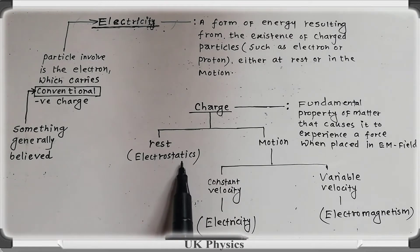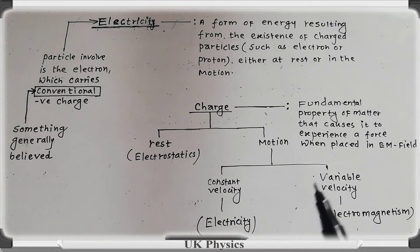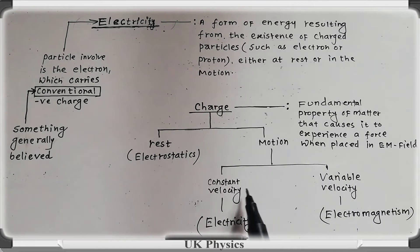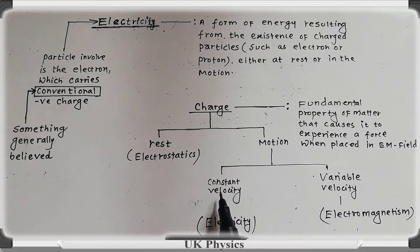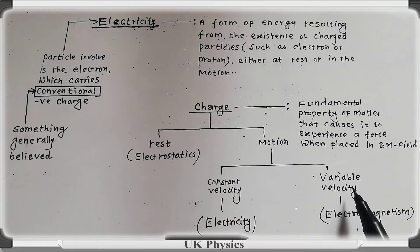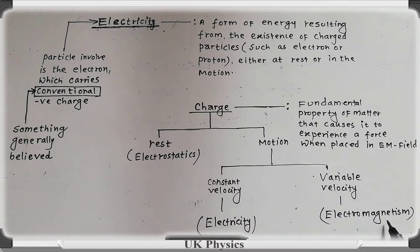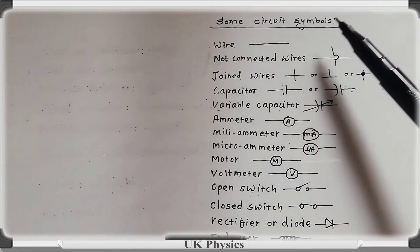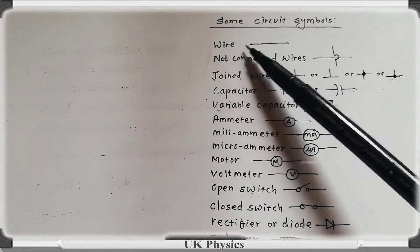Charge can be either at rest or in motion. The charged particle at rest is studied under electrostatics, which we already studied in Grade 11. In the case of motion, there are two possibilities: constant velocity and variable velocity. The charged particle at constant velocity is studied under electricity, and the charged particle at variable velocity is studied under electromagnetism.